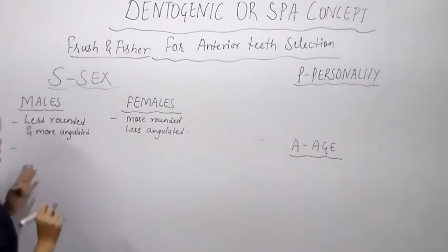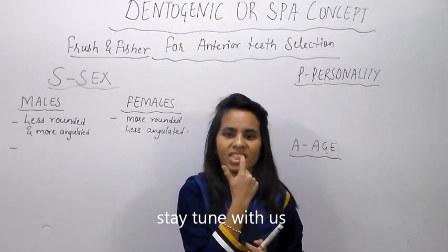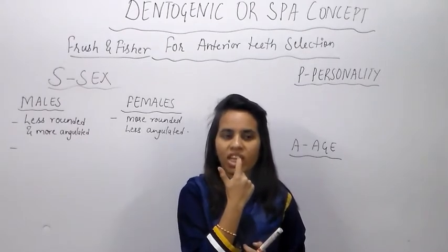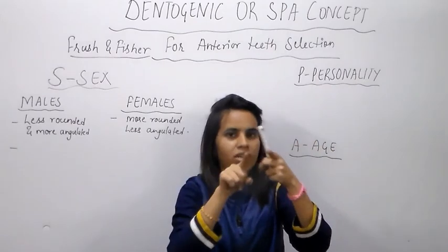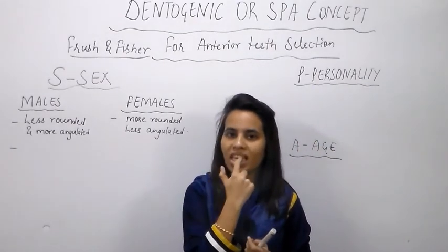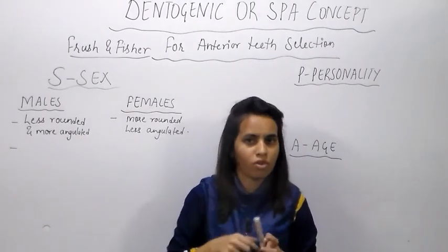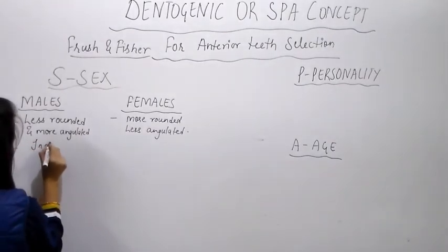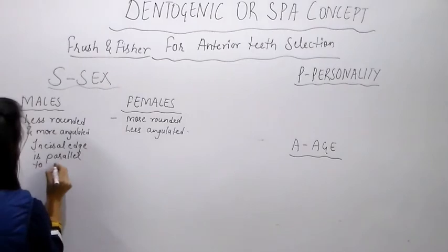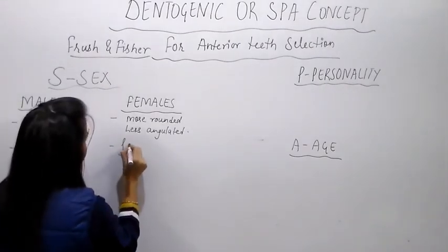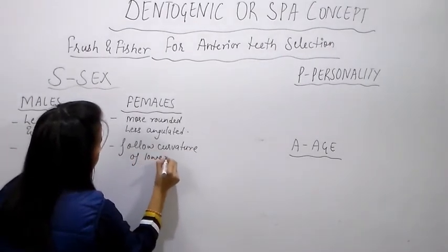Second factor regarding sex: for females, the incisor edge of the anterior incisors follows the curve of the lower lip — it curves according to the lower lip curvature. For males, the incisor edge of anterior teeth is parallel to the lips, whereas for females it follows the curvature of the lower lip.